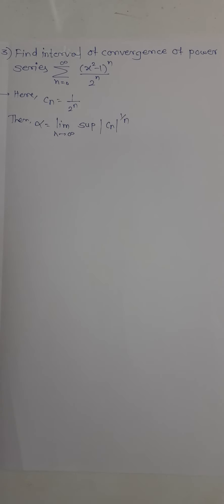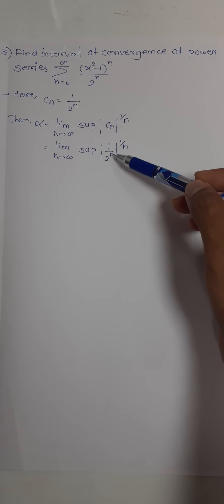I'll write the formula of alpha. Now I'm putting cn equals 1 upon 2 raised to n. This raised to 1 by n will cancel with n. 1 is constant, and if you take any power you'll have 1 only, so we focus on the denominator.